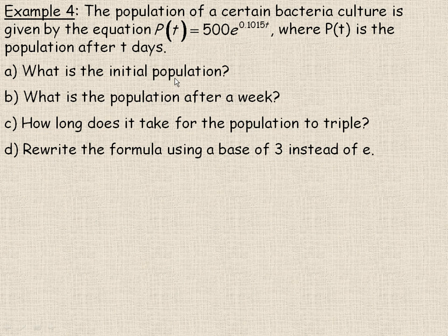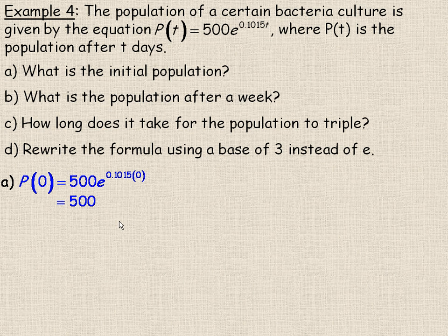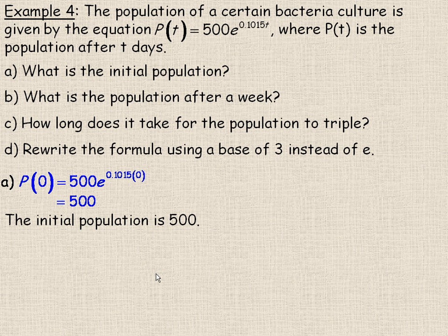You're asked: what's the initial population? Initial means that the time would be 0, so we fill in 0 in place of T. Now, 0 times something is 0, so this is E to the power of 0, which equals 1. Remember, anything to the power of 0 equals 1, except you can't raise 0 to the power of 0. So it's 500 times 1, which is just 500 — that's the initial population.